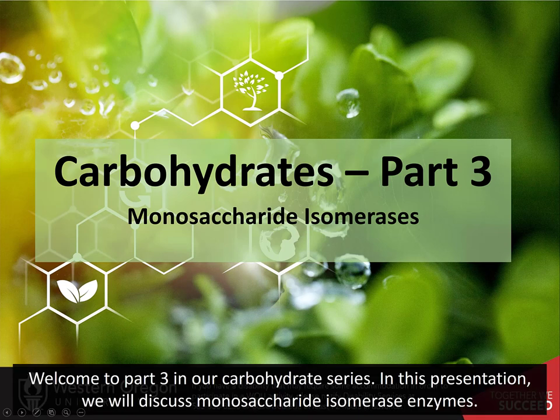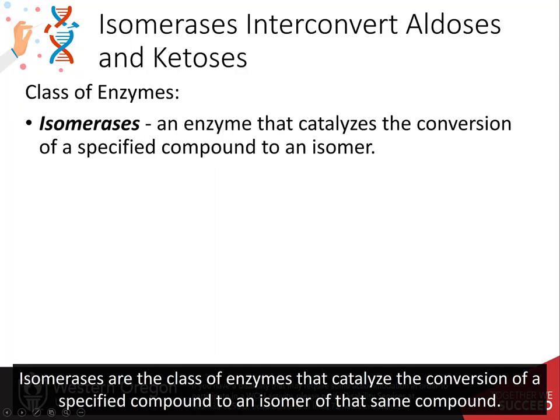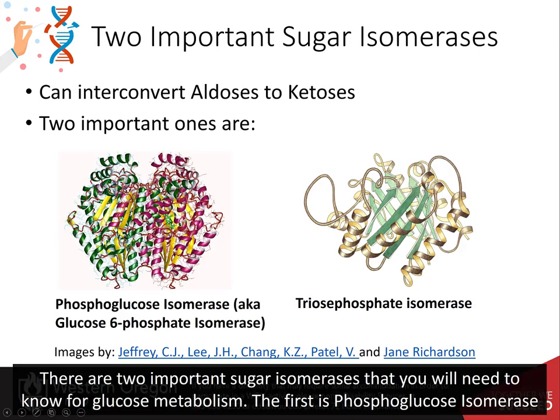Welcome to part 3 in our carbohydrate series. In this presentation we will discuss monosaccharide isomerase enzymes. Isomerases are the class of enzymes that catalyze a conversion of a specified compound to an isomer of that same compound. There are two important sugar isomerases that you will need to know for glucose metabolism.